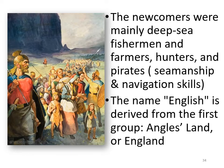The newcomers — the Anglo-Saxons, comprising those four tribes — were mainly deep-sea fishermen. They also were farmers, hunters, and pirates, and they had seamanship and navigation skills. The name 'English' is derived from the first group — the Angles — giving us 'Angle-land' or 'England'.